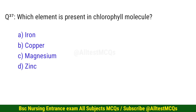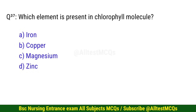Question number 37. Which element is present in the chlorophyll molecule? The right option is C: Magnesium.